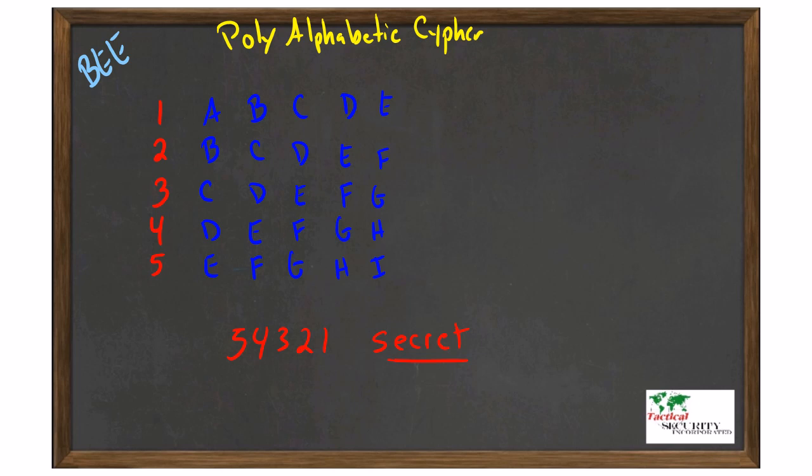The way that a polyalphabetic cipher works is you start with the first character in the plaintext that you wish to send. In this case, it's a B. You find the B column and cross-reference that with your secret. The first character in our secret is a 5, and that should bring us 5 and B to an F. So the first character in our ciphertext would be an F.